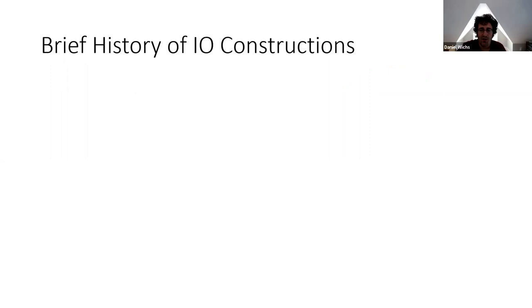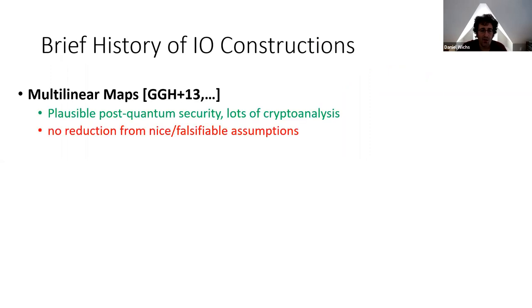The initial constructions of IO rely on something called multilinear maps. The good news is that these constructions are plausibly post-quantum secure and have received a lot of cryptanalysis. Some were broken, but the ones that survived have received a lot of attention. The hope is that if they haven't been broken yet, they're likely to actually be secure. But unfortunately these constructions don't have any proof of security or reduction from any nice or falsifiable assumption — we just have a candidate construction.